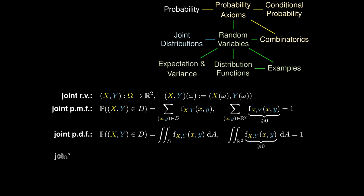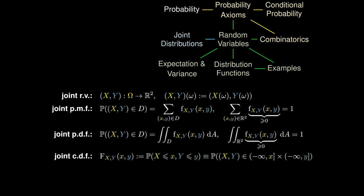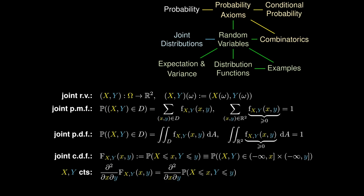Likewise, we can define the joint cumulative distribution function as the probability that the random variable X does not exceed the value x, and the random variable Y does not exceed the value y. If the random variables X and Y are jointly continuous, then taking the derivative with respect to Y followed by X gives us the joint PDF of X and Y.